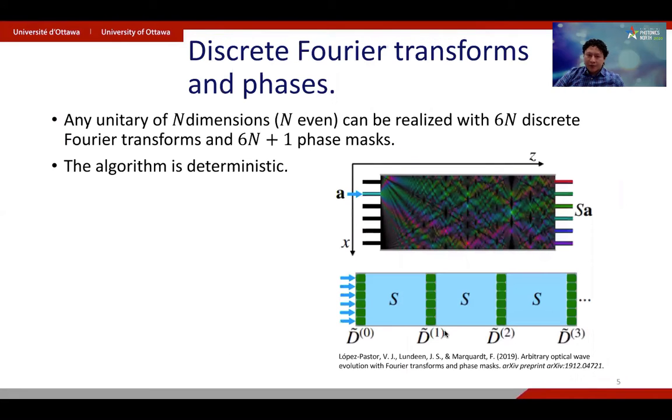Another platform to perform a unitary transformation is the one of discrete Fourier transforms and phases. This is a recent proposal that tells you, deterministically, how to implement a given unitary of dimension n. So if n is even, you need a linear number of discrete Fourier transforms and a linear number of phase masks to implement it. In order to achieve a discrete Fourier transform, you need to use a multi-mode waveguide, inject light, and then let that light propagate for some distance, after which it will observe the discrete Fourier transform. This proposal has not been implemented yet.